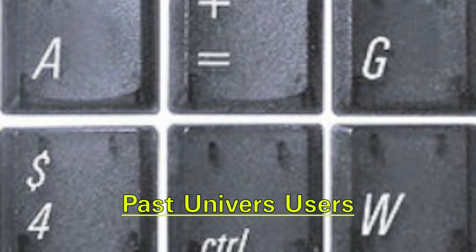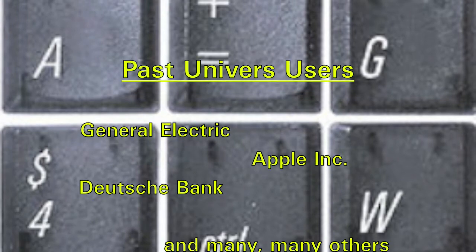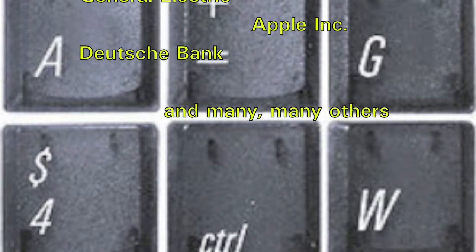Univers was extremely popular during the 1960s and 70s. Some companies that have used Univers are General Electric, Apple Inc., and Dutch Bank, among many, many others.